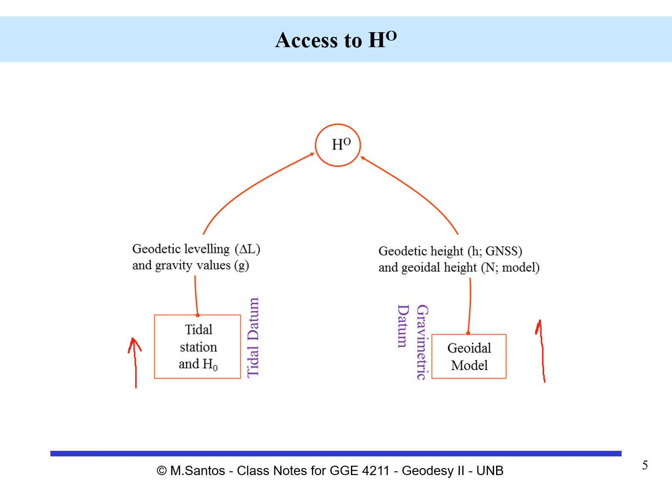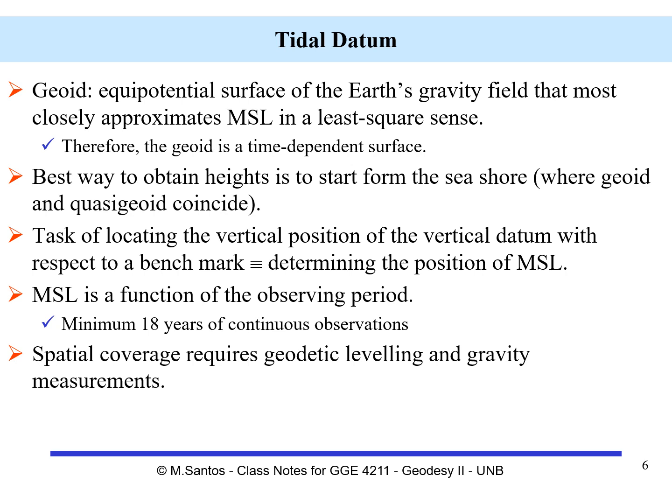The other path is what we call the gravimetric datum. We start with a geoidal model, and then the orthometric heights will be obtained by the measurement of geodetic heights and the application of geoidal heights from the geoidal model.